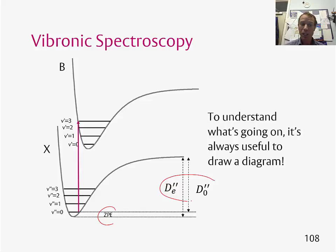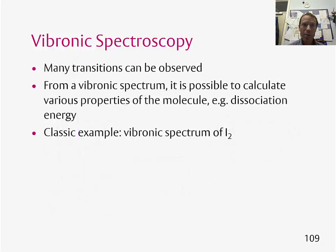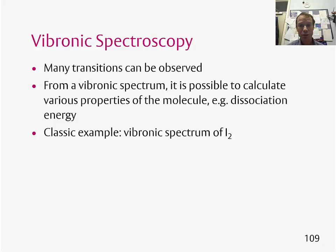We can then get transitions for any value of ΔV — for example, from V double-primed equals 0 to V prime equals 3 — and this corresponds to a peak in a spectrum. So if we measure an electronic spectrum, we can expect to observe many vibrational transitions at the same time. From a vibronic spectrum it's possible to calculate vibrational information, rotational information, and other information such as the dissociation energy of the molecule. A classic example is using the vibronic spectrum of I₂ to calculate the dissociation energy of the iodine molecule.